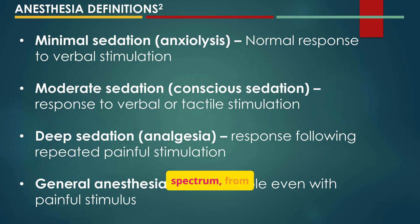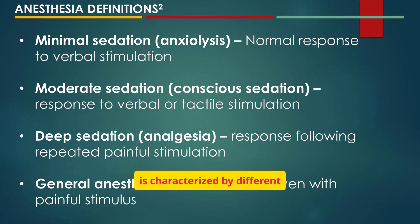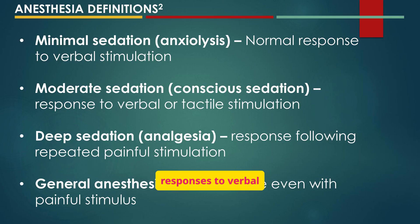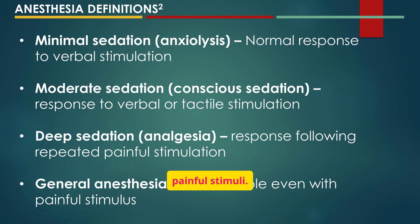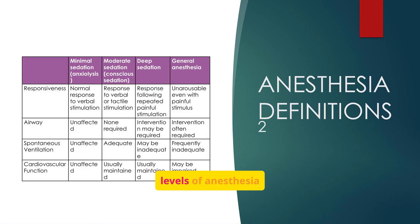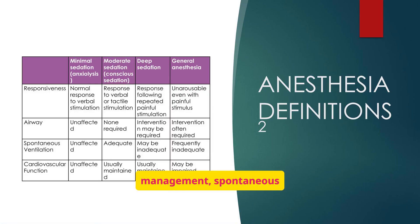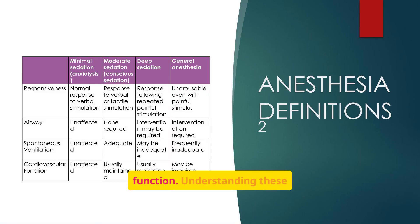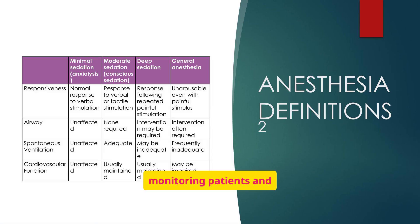Anesthesia exists on a spectrum, from minimal sedation to general anesthesia. Each level is characterized by different responses to stimuli, ranging from normal responses to verbal stimulation to unarousability even with painful stimuli. We can differentiate levels based on responsiveness, airway management, spontaneous ventilation, and cardiovascular function — understanding these differences is crucial for patient safety.